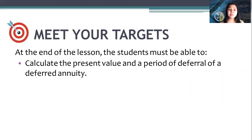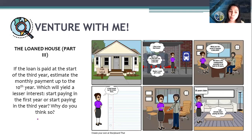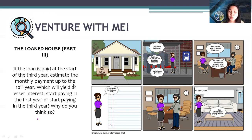At the end of today's class, you'll be able to calculate the present value and the period of deferral of a deferred annuity. Let's continue with our loan house story, part three — about a woman who paid monthly just to have her own house, which she had after 10 years. Here's the plot twist: if the loan is paid starting at the third year, estimate the monthly payment up to the 10th year. Which yields lesser interest — starting to pay in the first year or in the third year? Why do you think so?